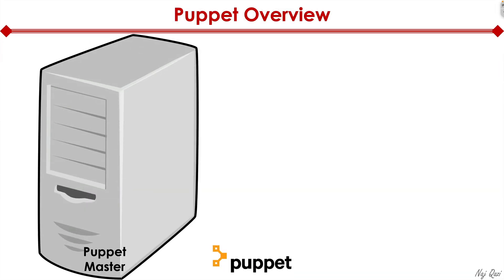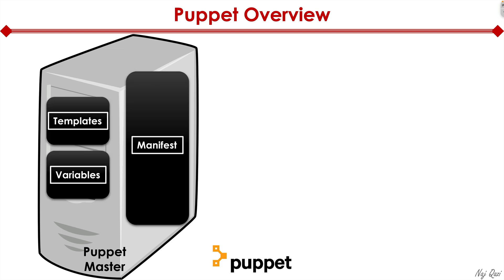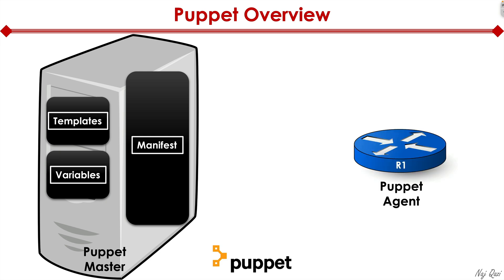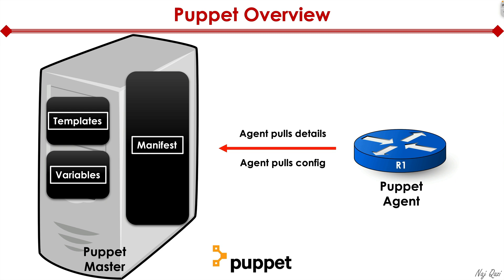Here is how Puppet works. We have a Puppet master — a Puppet server installed as a VM. We have templates and variables, which are basically a subset of the manifest. Then we have a Puppet agent that pulls details from the manifest to compare the config it has against the desired state defined in the manifest. If it finds itself out of compliance, it goes ahead and pulls the config. The onus is on the agent, not the server, to pull the configs.